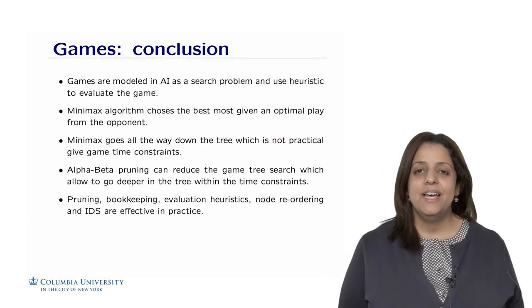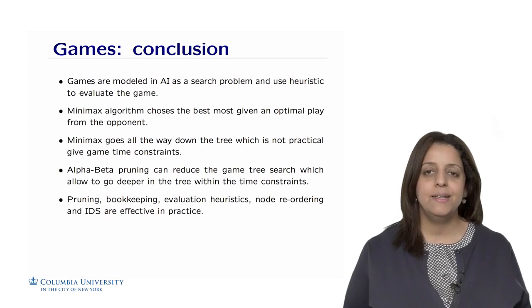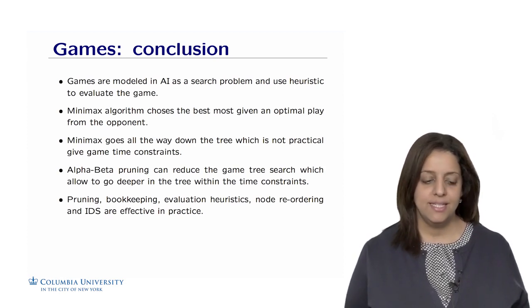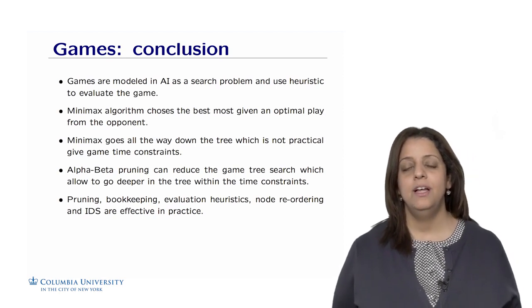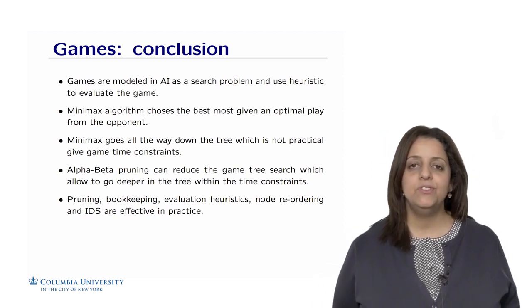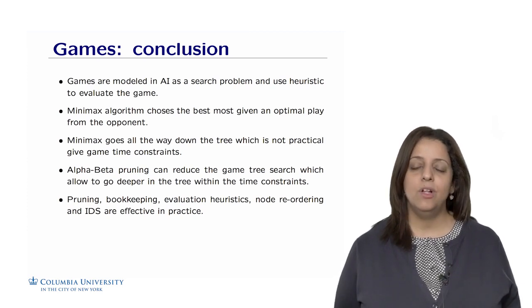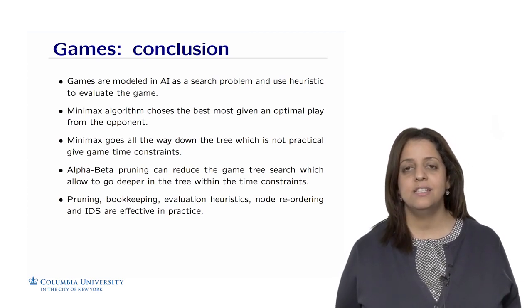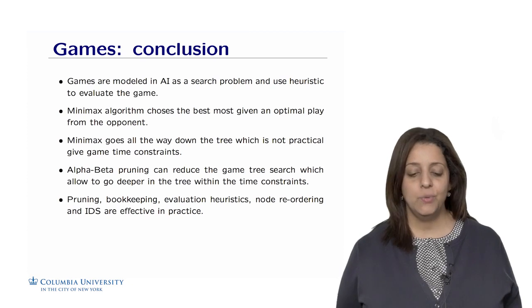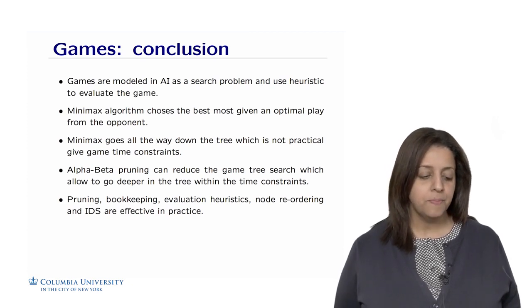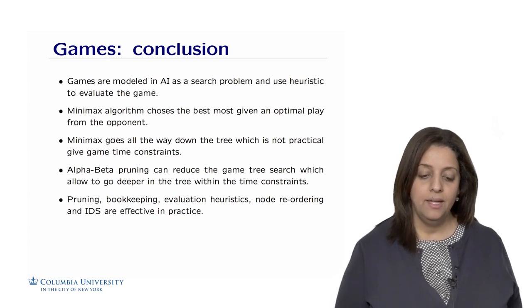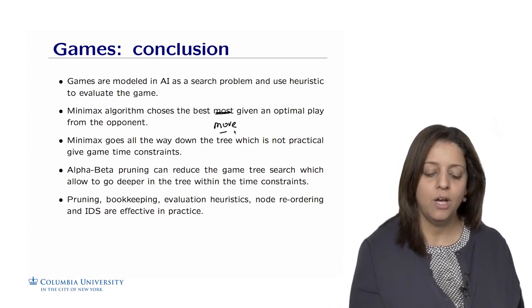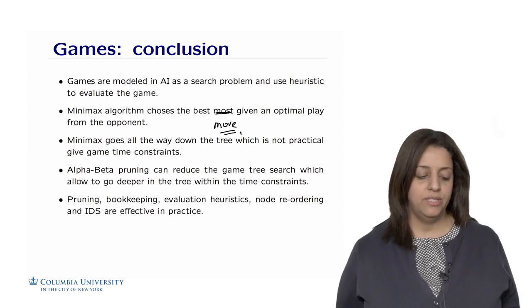We are reaching the end of the Adversarial Search Lecture in which we've seen that games are modeled in AI as search problems and use heuristics to evaluate the game. It's a complicated problem for AI, but it has proven to be solvable for many complex games such as chess or Go. We have good algorithms for those.